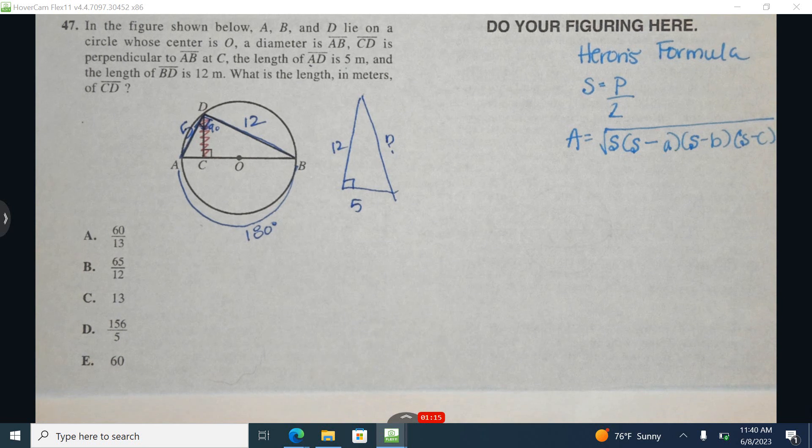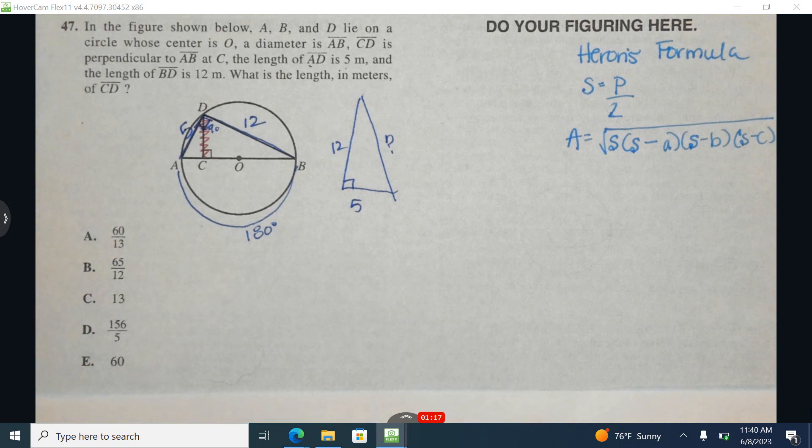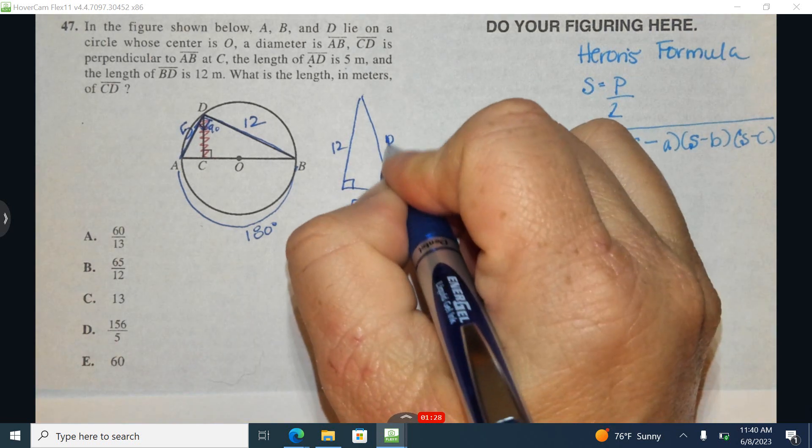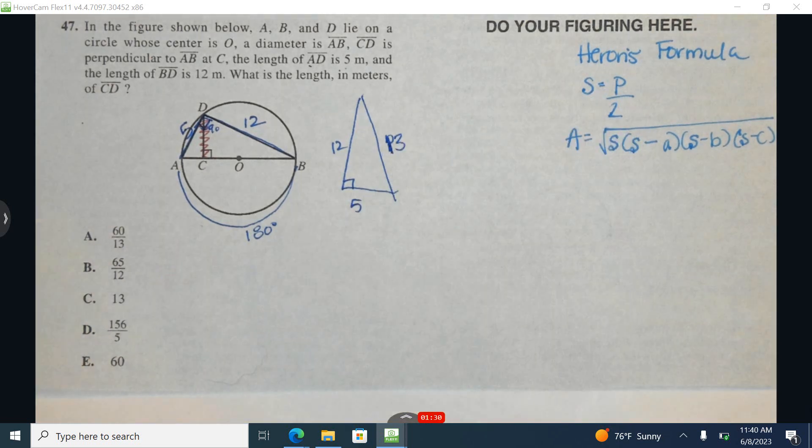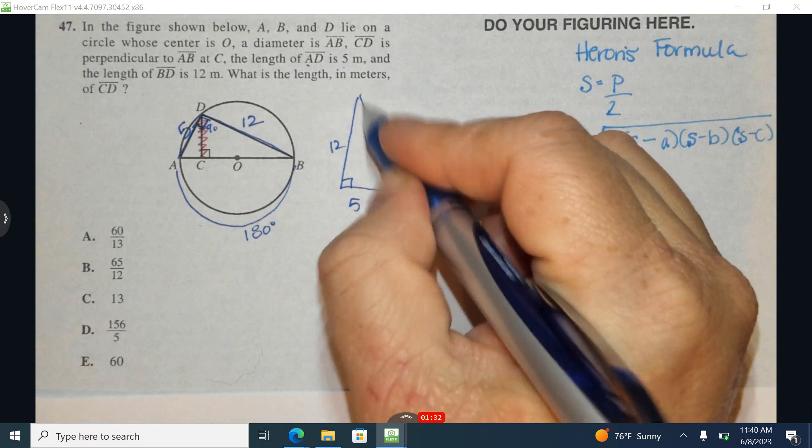Now if you've been in my class, we've talked about the different type of Pythagorean triplets. One of the most common ones is 3, 4, 5. A second very common one is 5, 12, 13. Now if you were not in my class or you forgot that, how could you figure out this missing piece?